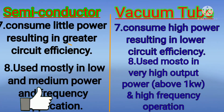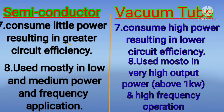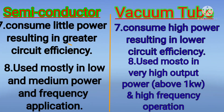Point 7 (Semiconductor): Consumes little power resulting in greater circuit efficiency. Point 8 (Vacuum Tube): Consumes high power resulting in lower circuit efficiency. Point 10: Semiconductor is used most in very high output applications. Point 11: Vacuum Tube is used mostly in low and medium power or efficiency. Semiconductor provides very high output.